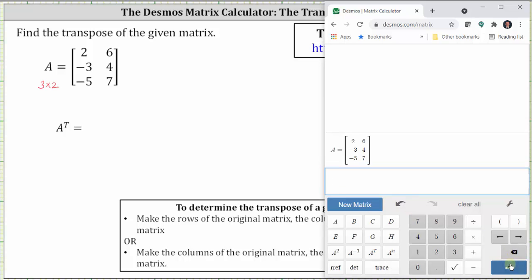And now to determine A transpose, click matrix A and then the transpose key, which is A superscript capital T, enter, and notice A transpose is a two by three matrix.